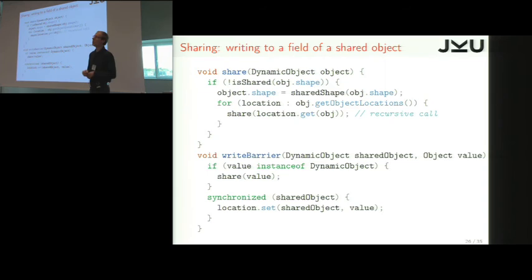Simply, we create a new shape with an extra flag that says, this is shared. And then we go through every field of the object and share recursively. Of course, this is fairly expensive. So what we want to see, what we did is optimize some common cases.